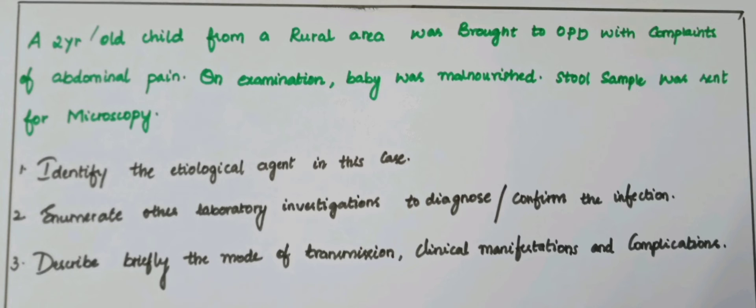The third question: describe briefly the mode of transmission, clinical manifestations, and complications. Mode of transmission: ingestion of embryonated eggs from contaminated soil, food, and water.